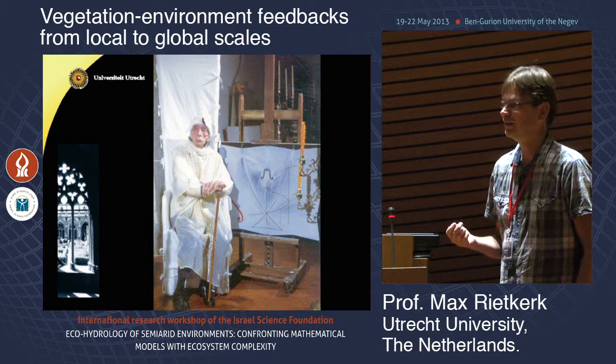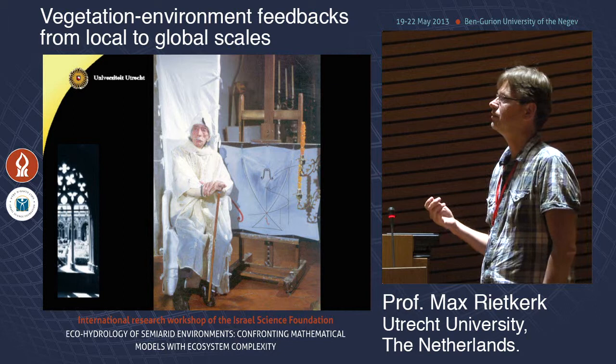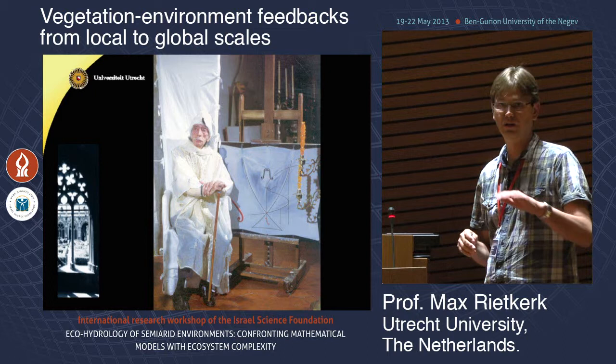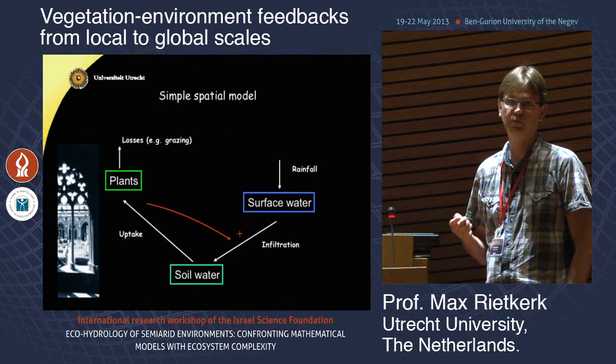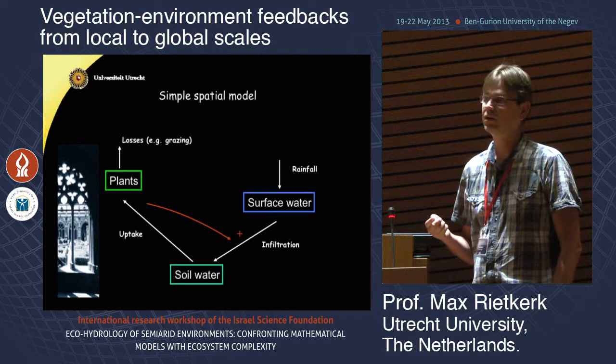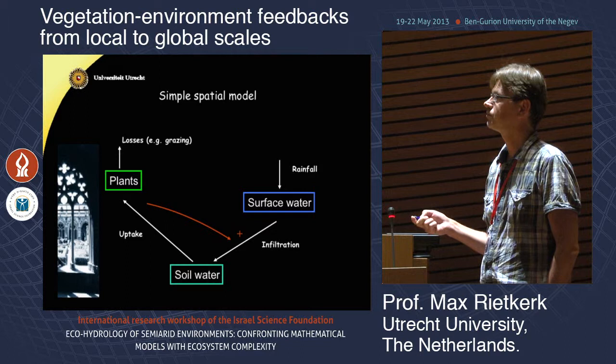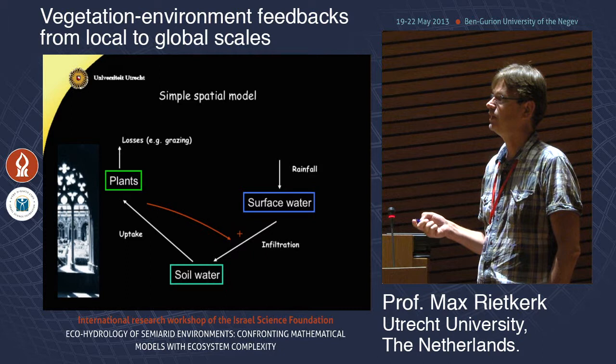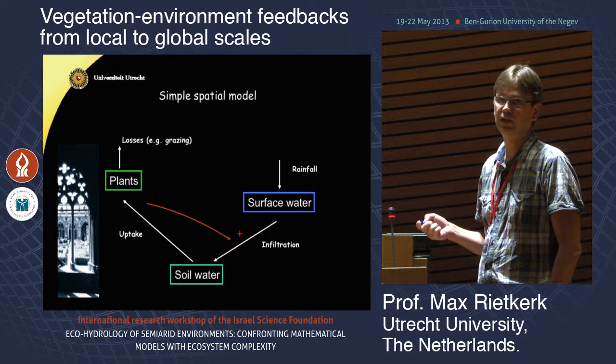Of course, this is a very crude, simple model — maybe even oversimplistic. We realized that in arid ecosystems, rainwater that does not infiltrate into the soil can still flow away and infiltrate in other places. That's why we made this simple model spatially explicit, to see how this would affect the structure and functioning of the system. We added to this model another component — surface water — and assumed that in areas where there are plants, water infiltration is higher, which increases soil water and plant growth.